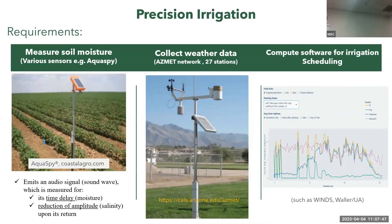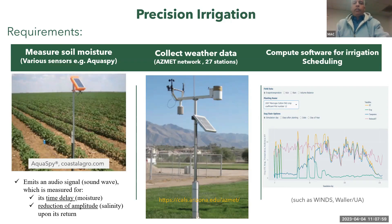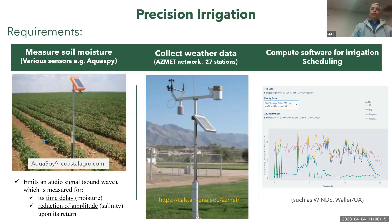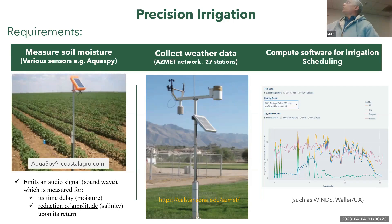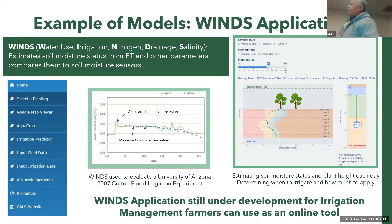Beyond irrigation systems, we can use sensors to improve irrigation management. One type emits audio signals; based on the delay in return time and reduction in amplitude, it measures soil moisture content and salinity. We also use weather stations — Arizona has AZMET weather stations statewide — and irrigation models like the WINDS model created by Dr. Peter Waller at the University of Arizona, which shows good agreement between predicted and measured soil moisture content.